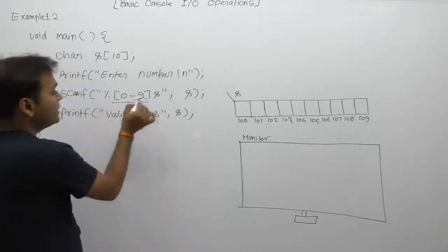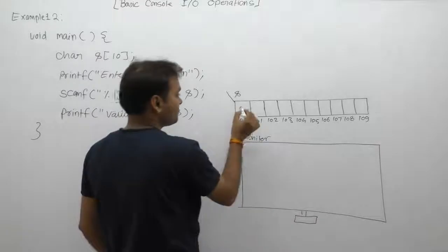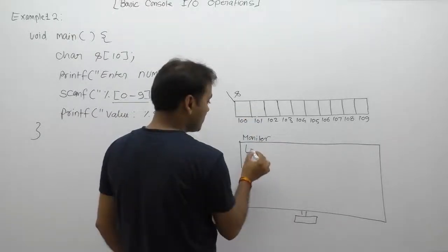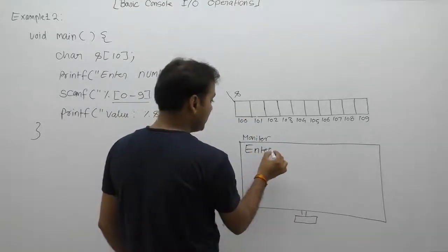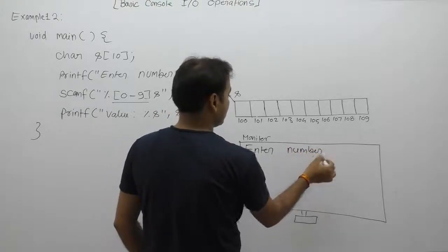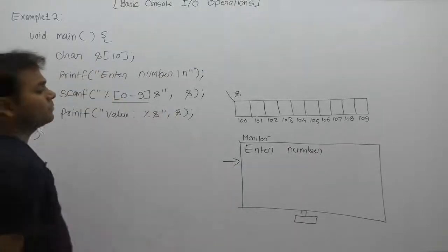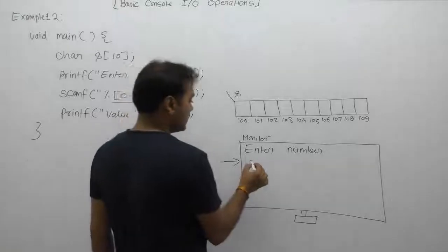We are providing the 0 to 9 range. Suppose we are entering some digits using the monitor. First of all, a message is displayed as 'enter number', then the cursor will go to the next line.